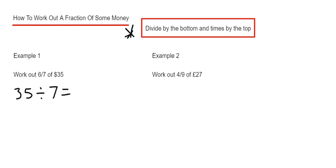35 divided by 7 is 5. We put that answer on the next line down and multiply it by the top number of the fraction, which is 6. So 5 times 6 is 30. We get $30 as our final answer.